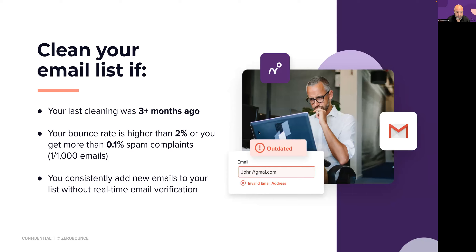You need to clean your email list if it's been over three months. If you haven't touched your database in over three months, do it now. I highly recommend you never go longer than six months without cleaning the entire thing. In six months, roughly 11-12% of your data will have decayed. Don't send and then deal with it — get in front of this. Bounce rates higher than 2% and more than 0.1% spam complaints will label you as a spammer.